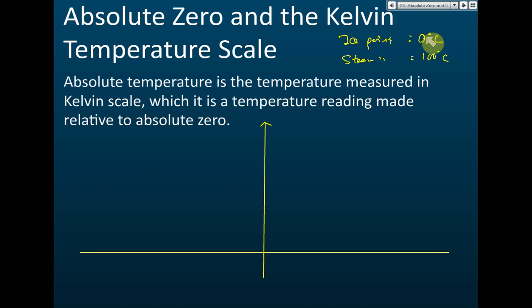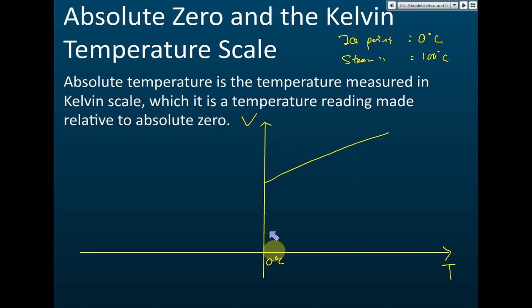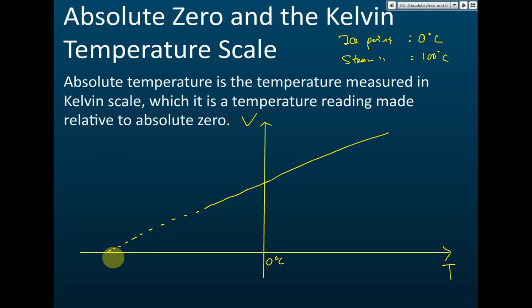Scientists did experiments measuring the volume of a gas against temperature. They found that below zero degrees Celsius the gas still exists, and you can still decrease the temperature lower than zero. The volume keeps going down until the gas turns to liquid — at that point you can't continue the experiment anymore.